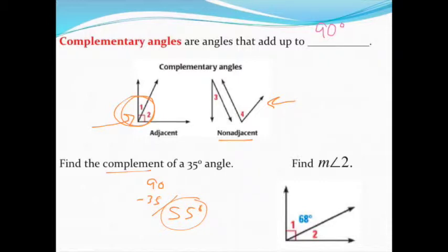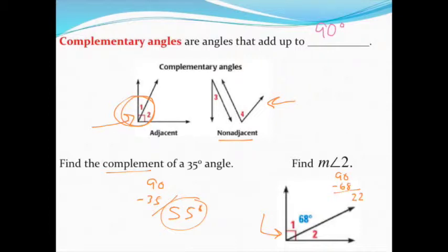Here we are asked to find the measure of angle 2. Nothing says this is a complementary angle, but notice the right angle symbol, so we know these angles have to add up to 90. Just like last time, we'll do 90 minus 68 to figure out what's missing to get to 90 degrees, and come up with an angle of 22 degrees.